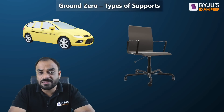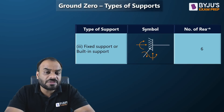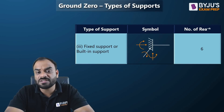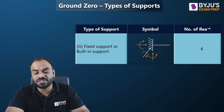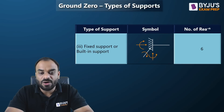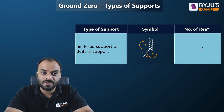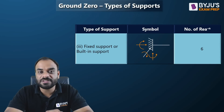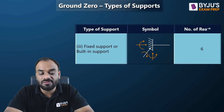The last 3D support type is the fixed or built-in support, which develops a total of six reactions: vertical reaction, two horizontal reactions, bending moment, vertical bending moment, horizontal bending moment, and twisting moment. All reactions develop here. I hope you all understand the various types of support conditions and the reactions developed at each. Thank you so much, see you in the next video.